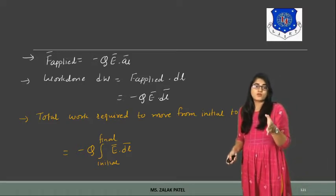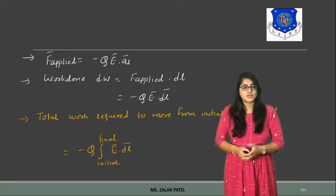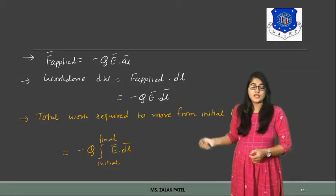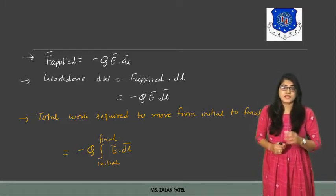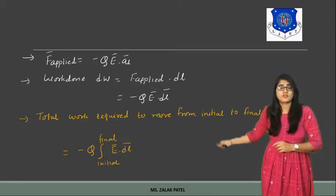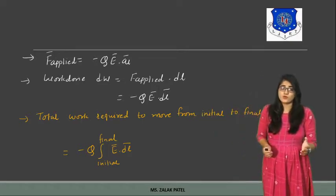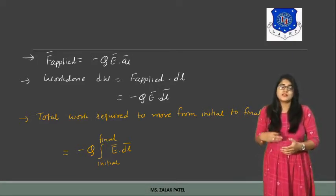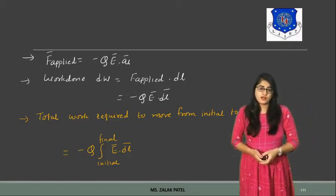Taking the total work done from some initial point to a final point, we integrate: W equals minus Q times the integral from initial to final of E·DL. The negative sign is considered because the charge is positive. If the charge is negative, then the total work equation becomes plus Q times the integral, because the force applied is in the opposite direction — so for a negative charge we work in the positive direction. This is the final equation for incremental work done.